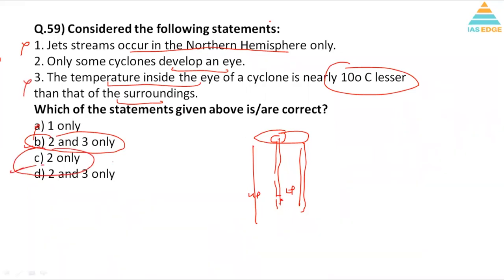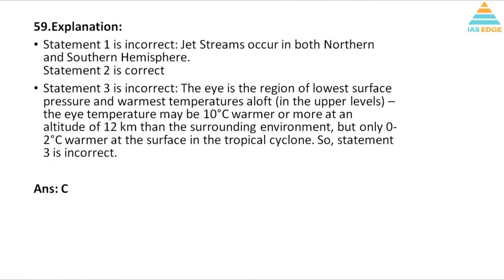Only 2 is the right answer here, C is the right answer. So let's see: jet streams occur in both northern and southern hemisphere, statement one is incorrect. Two is correct as we discussed, the eye. Statement 3 is incorrect - the eye is the region of lowest surface pressure and warmest temperature in the upper level, maybe 10 degrees warmer or more at an altitude of 12 km from the surrounding, but only 0 to 2 degrees warmer at the surface in the tropical cyclone. So statement 3 is incorrect, so answer is 2 only.